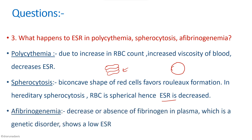In afibrinogenemia there is a decrease or absence of fibrinogen in the plasma. Fibrinogen is a protein that helps in rouleaux formation, so when fibrinogen is absent, rouleaux formation is decreased and ESR is low.